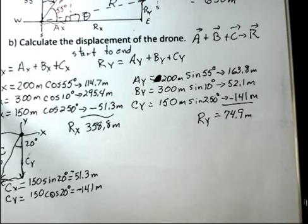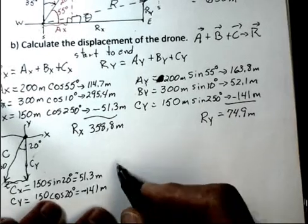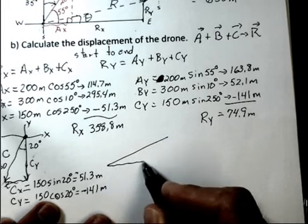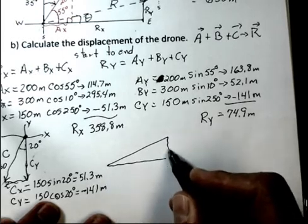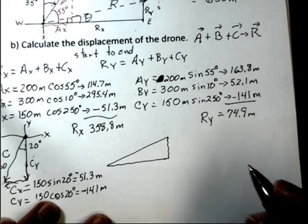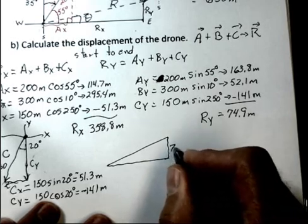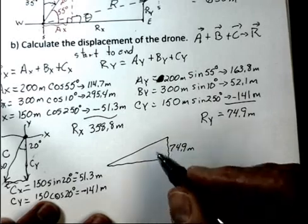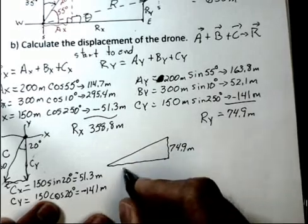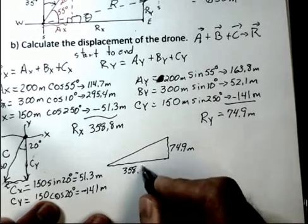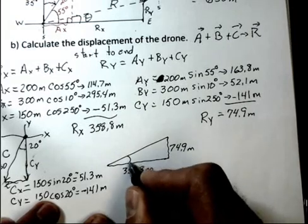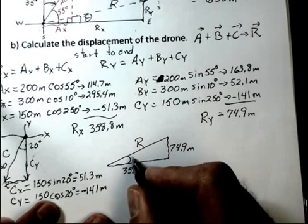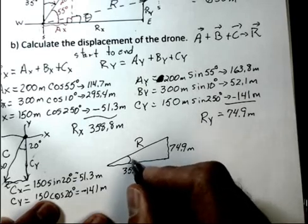And now I'm going to create a triangle here for the R. And this is approximate. I'm making a little bigger angle than I should, just so I can put the numbers on here easily. So 74.9 meters, that's the y result. And that's a positive. And the x result is 358.8 meters. That's a positive. We're trying to find the length of the resultant, the displacement.